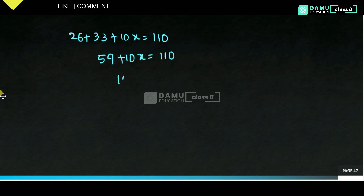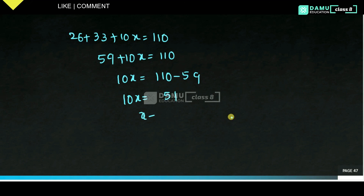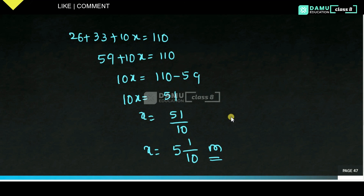So 59 plus 10x equals 110, then 10x equals 110 minus 59 equals 51, so x equals 51 by 10. Converting to a mixed fraction: 5 tens are 50, remainder 1, so x equals 5 and 1 by 10 meters. That is our answer. Thanks for watching, please subscribe.